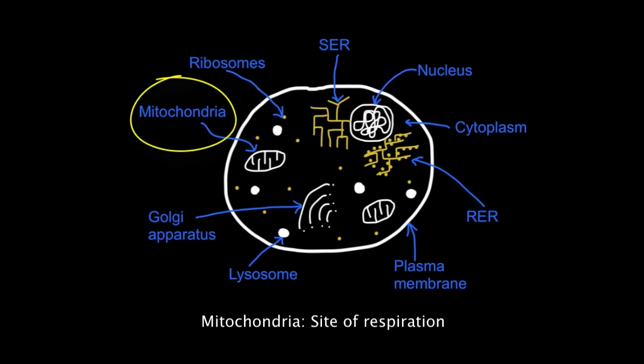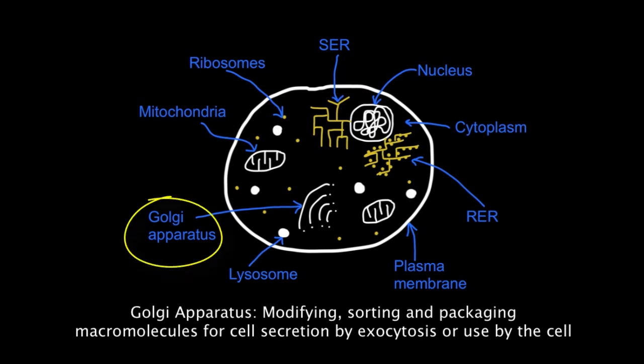The mitochondria you see here are the site of respiration, and the Golgi apparatus is used for modifying, sorting, and packaging macromolecules for cell secretion or use in the cell. Cell secretion of these macromolecules occurs by exocytosis.